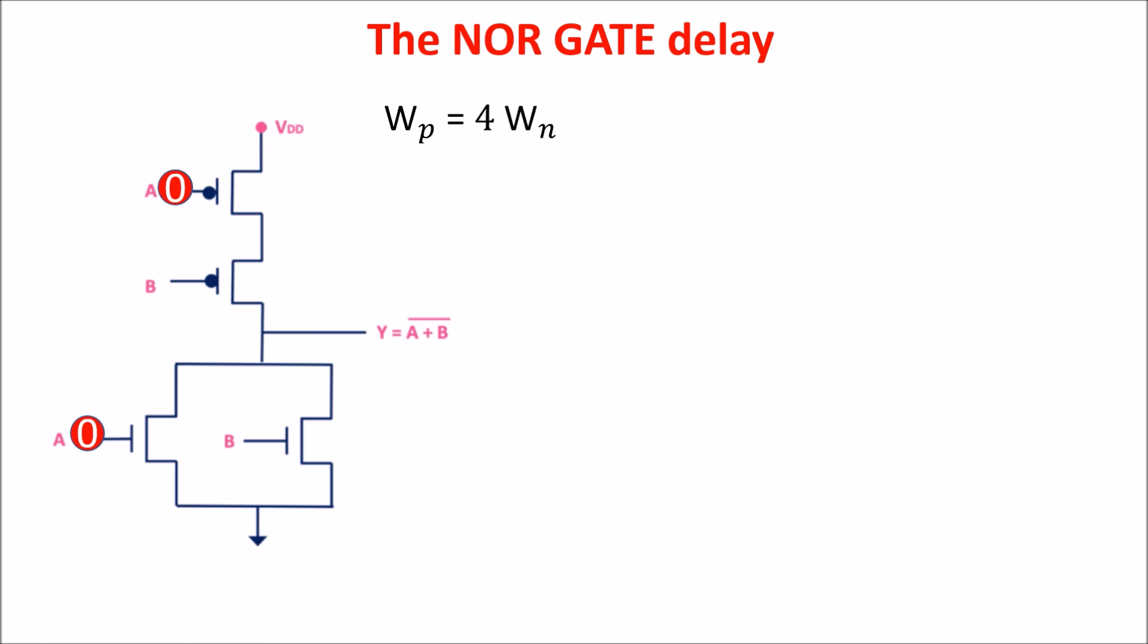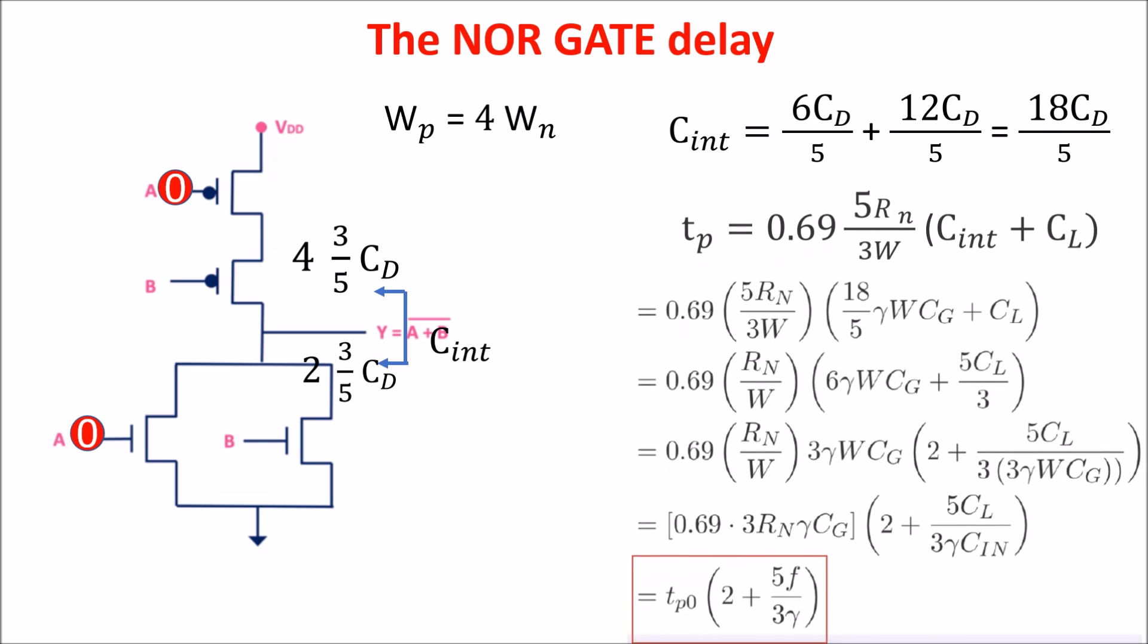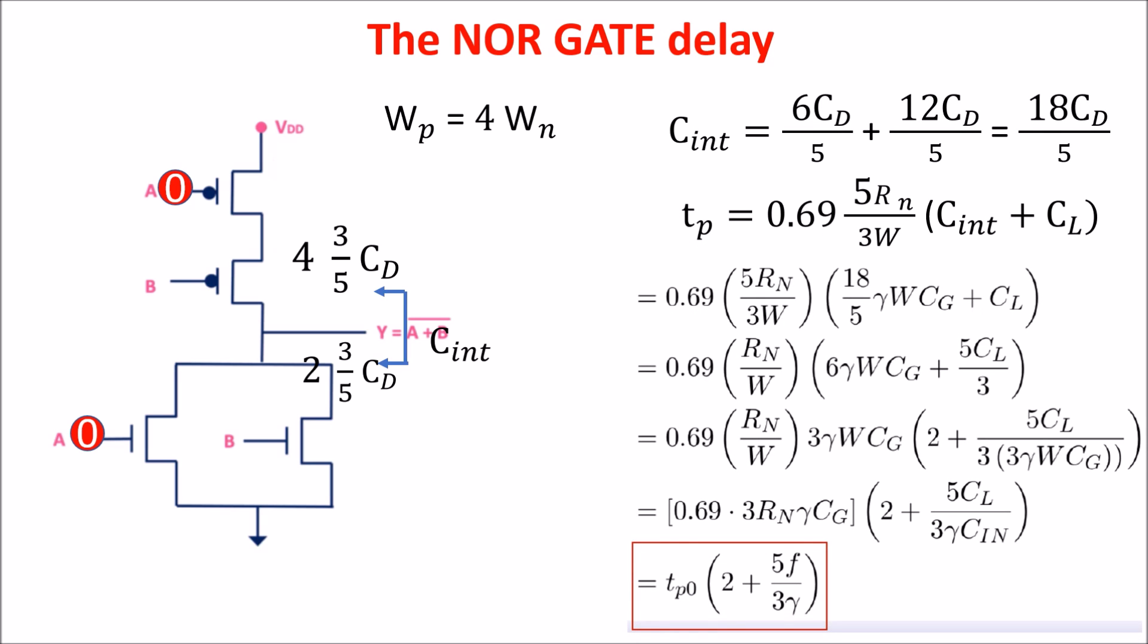The intrinsic capacitance is equal to 4 times 3/5 Cdrain toward the PMOS and 2 times 3/5 Cdrain toward the 2N MOS. So, C intrinsic is equal to this. In carrying out calculation, we get the propagation time as function of the fanout, so the ratio between the load capacitance and the input capacitance.